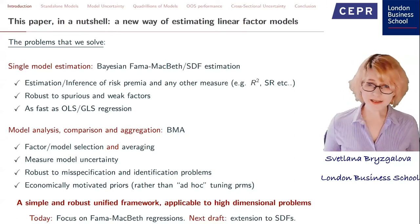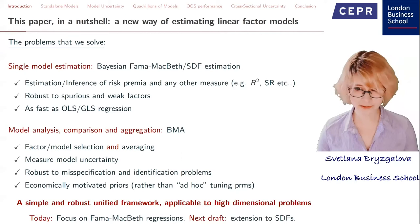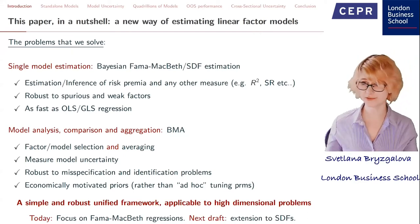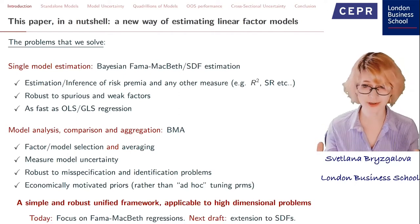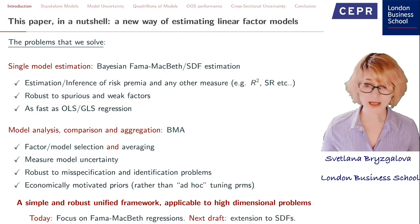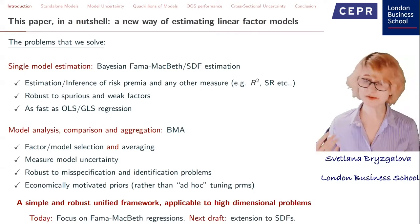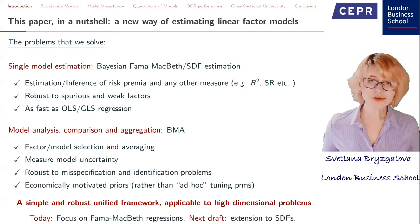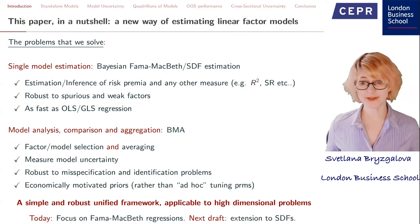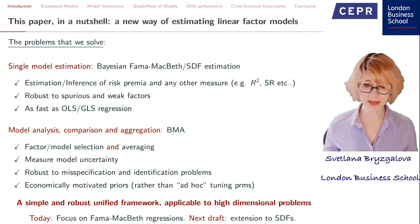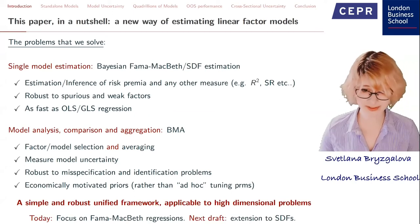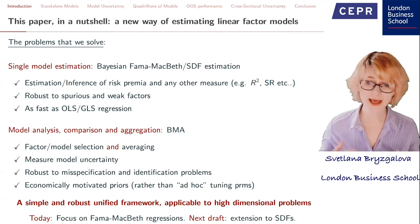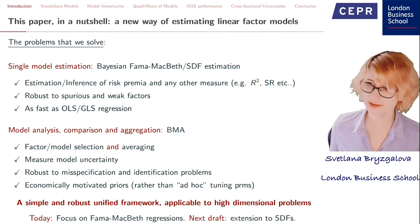I'm going to focus on Fama-MacBeth regressions, both for standalone model estimation and for learning from the universe of potential models. We're also working on extending results to the SDF setting — a fairly trivial extension. For single model estimation, the method provides estimates and confidence intervals for risk premia or any other quantity of interest — R-squared, Sharpe ratio, anything — in literally a fraction of a second. Inference is automatically robust to spurious or weak factors, as fast as running a simple OLS or GLS regression.